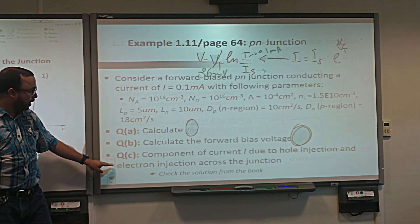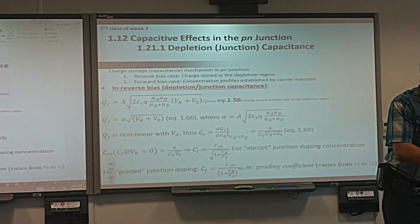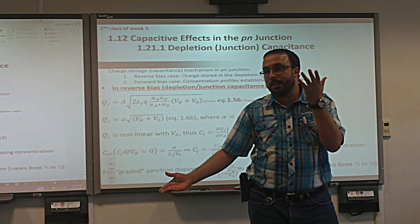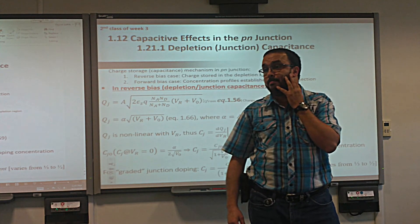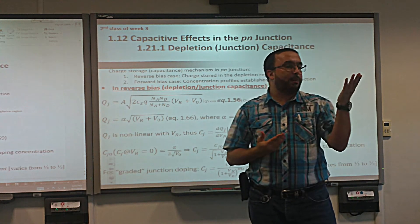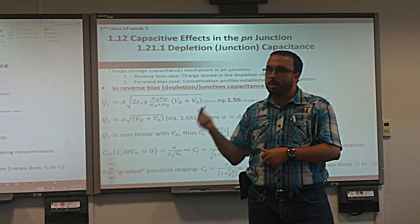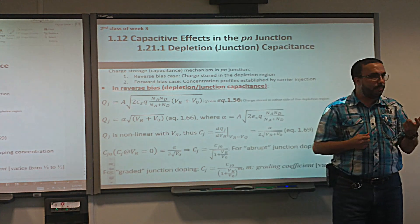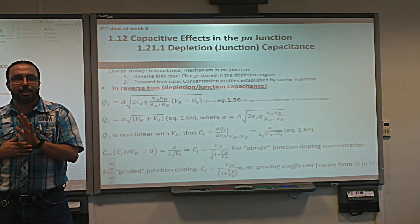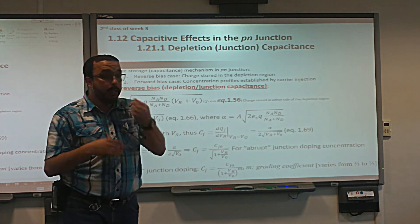We finished that example. Now let's start the remaining topic for today's class: capacitance. We said that the depletion region acts like a capacitor — a 'muqathefa' in Arabic — like two plates, one positive and one negative. However, it's not a capacitor; it has capacitance. The junction behaves like it has a capacitive property.